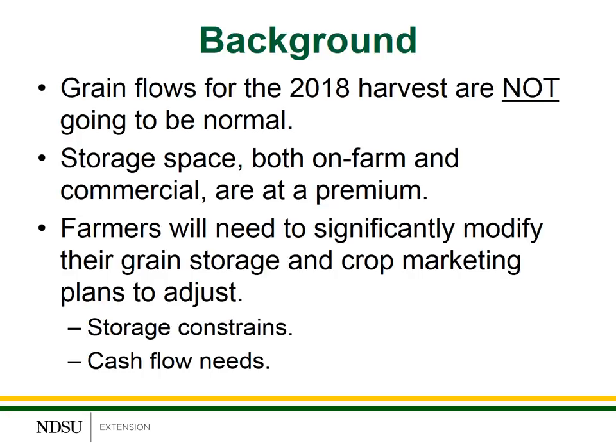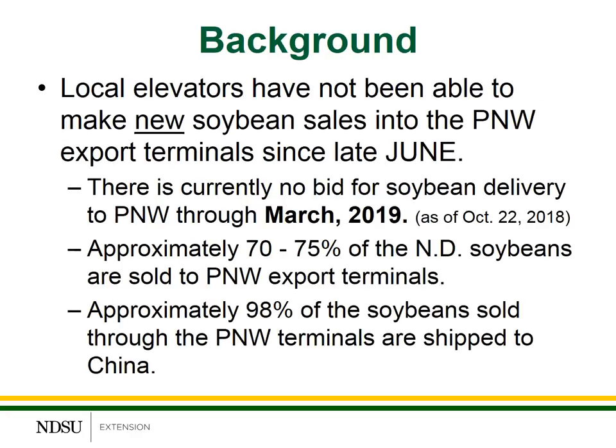The two biggest constraints are: first, storage — there's only limited capacity for storage in the short term. And second, we're still going to have to meet our cash flow needs. So which crops you sell and at what time period may have to be adjusted from your normal marketing plan. What's been happening at the local elevator level? Local elevators have not been able to make new soybean sales into the PNW export markets or export terminals since late June.